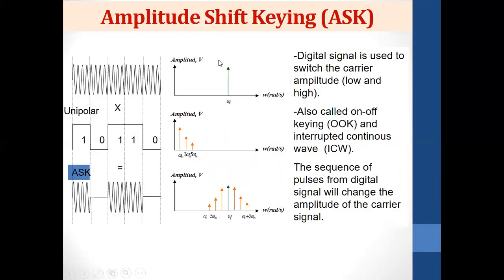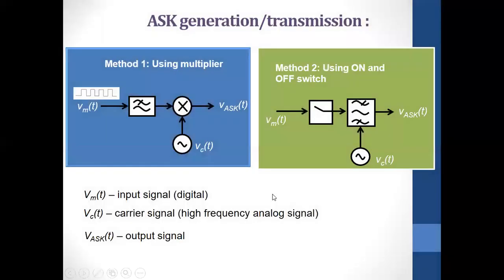Let us see how ASK amplitude shift keying modulation works. This is the carrier, and this is our data signal. They are multiplied and mixed together. The carrier has constant amplitude, whereas the output amplitude varies depending on zero and one. The bit duration is one bit duration. For bit one, the carrier sample is captured; for bit zero, nothing is transmitted — multiplied by zero gives zero. This is how amplitude shift keying is done, also known as on-off keying.